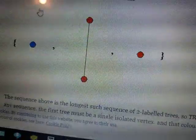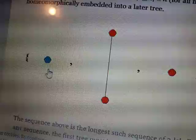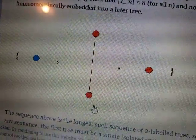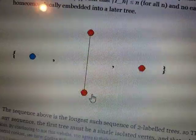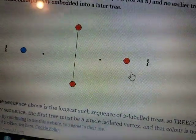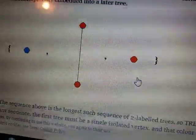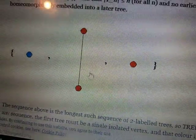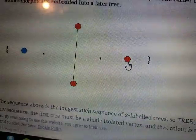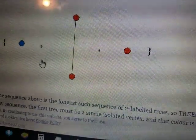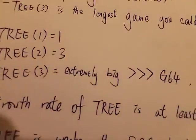So this is the example here using two colors blue and red. First you can draw a blue seed, then the second you can do two red seeds, and the third one you can do just one red seed and then the game ends. This thing over here is not contained in here, that's why this is allowed. That's why the longest game you could play for TREE(2) is 3.